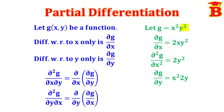Again, differentiating this gives the second derivative, denoted ∂²g/∂y². We have to differentiate with respect to y only. Here, the y term: differentiation of y is 1. 1 into the constant 2x² gives 2x². So ∂²g/∂y² equals 2x². This is the meaning of partial differentiation.